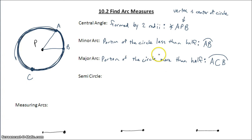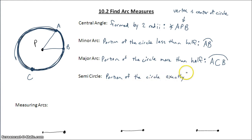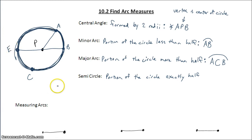A semicircle — we have less than half, more than half — a semicircle is a portion of the circle that is exactly half. In order to get exactly half, I have to draw in a diameter. So I extend PB all the way across the circle to create a diameter, calling that point E. Now we have two semicircles: if we start at B and go this way around the circle all the way to E, that's a semicircle, and if we go the other way around, we have another semicircle.